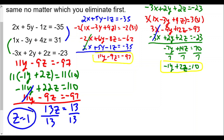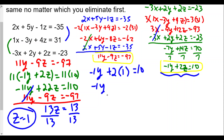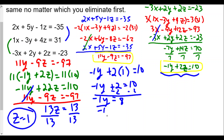Dividing both sides by 13 we get z equals 1. That works out very nicely. Now we can substitute back into our equation negative 1y plus 2z equals 10. Plugging in z equals 1: negative 1y plus 2 times 1 equals 10, so negative 1y plus 2 equals 10. Subtracting 2 from both sides: negative y equals 8, and dividing by negative 1 gives y equals negative 8.